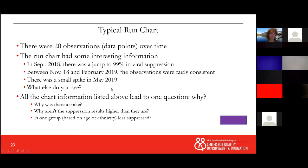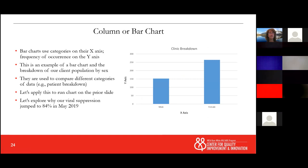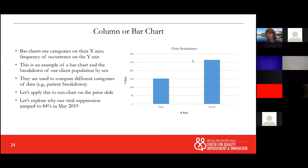Some other tools you can use are column and bar charts. For those, the categories are usually along the x-axis and the frequency of occurrences on the y-axis. Here I've broken down the client population by sex — I have more female clients than male clients. Is this good information? It is, because now I know I need to be a little more concerned about the female patients — am I serving them in the way they feel most comfortable?